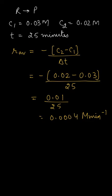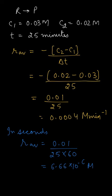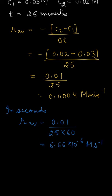We can also express this in seconds. Since 1 minute equals 60 seconds, the average rate equals 0.01 — the change in concentration — divided by 25 into 60, because 25 minutes equals 1500 seconds. That gives us 6.66 into 10 raised to the power minus 6 mole per second.